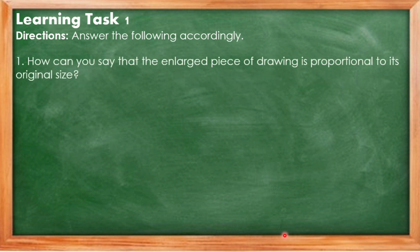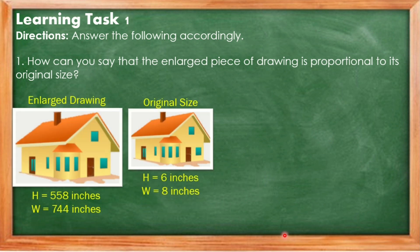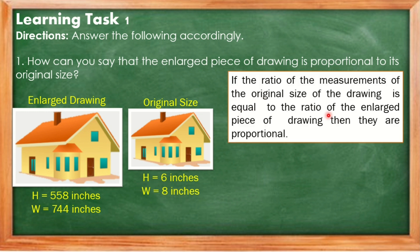Question number 1: How can you say that the enlarged piece of drawing is proportional to its original size? For example, we have here an enlarged drawing of a house and on the right side is the original size drawing of a house. The answer is: if the ratio of the measurements of the original size drawing is equal to the ratio of the enlarged piece of drawing, then they are proportional.